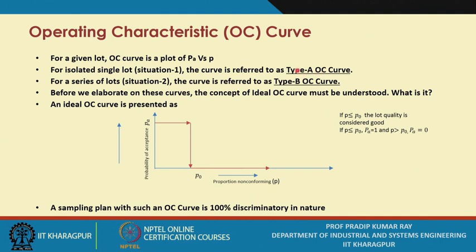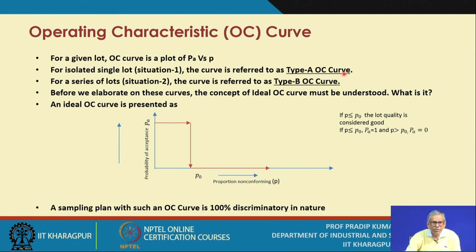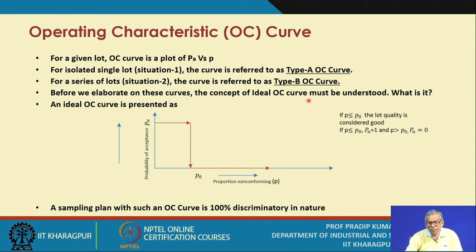For constructing a Type A OC curve, the distributional assumption is hypergeometric, as already discussed for the isolated single lot case. For a series of lots, we assume the distribution of the random variable is binomial. Before elaborating on these curves, the concept of the ideal OC curve must be understood.